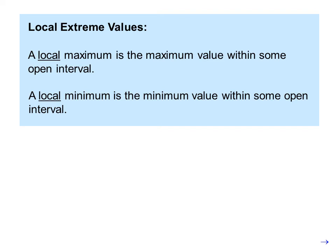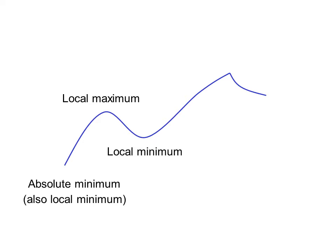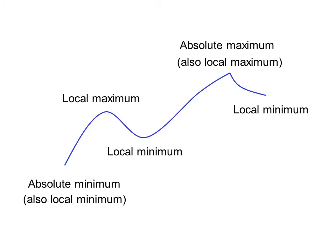Local extreme values: a local maximum is the maximum value within some open interval, and a local minimum is the minimum value within some open interval. An example from real life might be the pitcher's mound in a baseball field — even though it might not be the highest point in town, it is the highest point within the baseball field. In a typical example, we can identify an absolute minimum (which is also a local minimum), local maximums, local minimums, and an absolute maximum (which is also a local maximum), all on a closed interval.